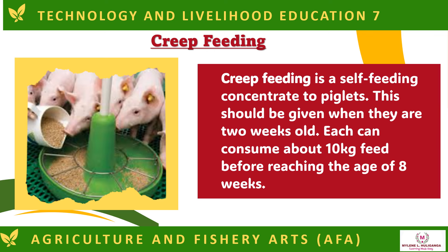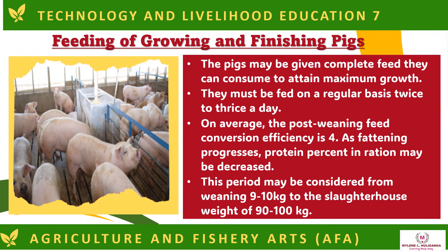Creep feeding is a self-feeding concentrate given to piglets when they are two weeks old; each can consume about 10 kilograms of feed before reaching eight weeks of age. For growing and finishing pigs, they may be given complete feed and must be fed on a regular basis, twice to thrice a day. On average, post-weaning feed conversion efficiency is 4. As fattening progresses, protein percentage in the ration may be decreased. This period is considered from weaning at 9–10 kilograms to slaughter weight of 90–100 kilograms.